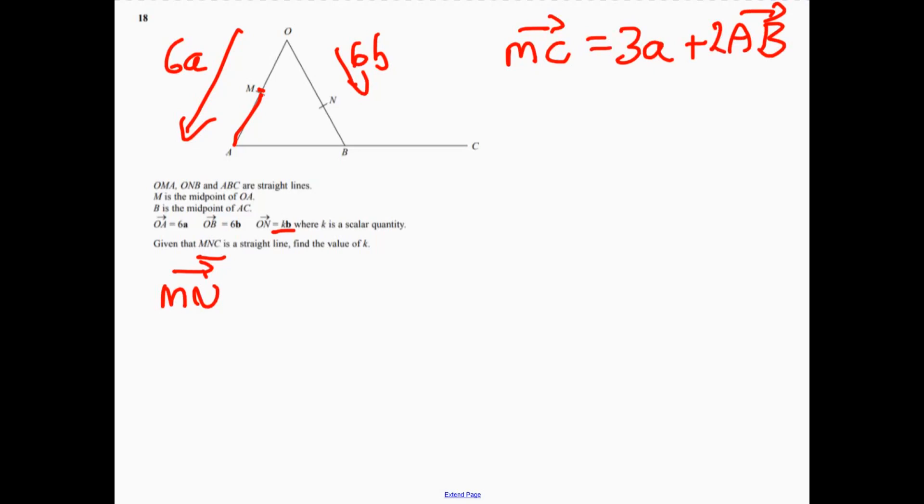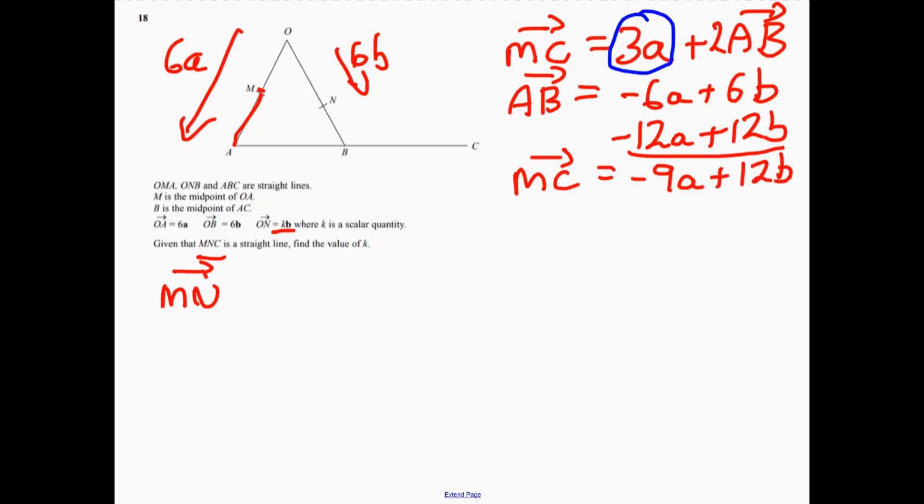So let's think about vector AB. So vector AB is going to be minus 6a plus 6b. So that's minus 12a plus 12b. So MC is equal to... Don't forget that 3a up there. And add what we've just done just here. So that's going to be minus 9a plus 12b.